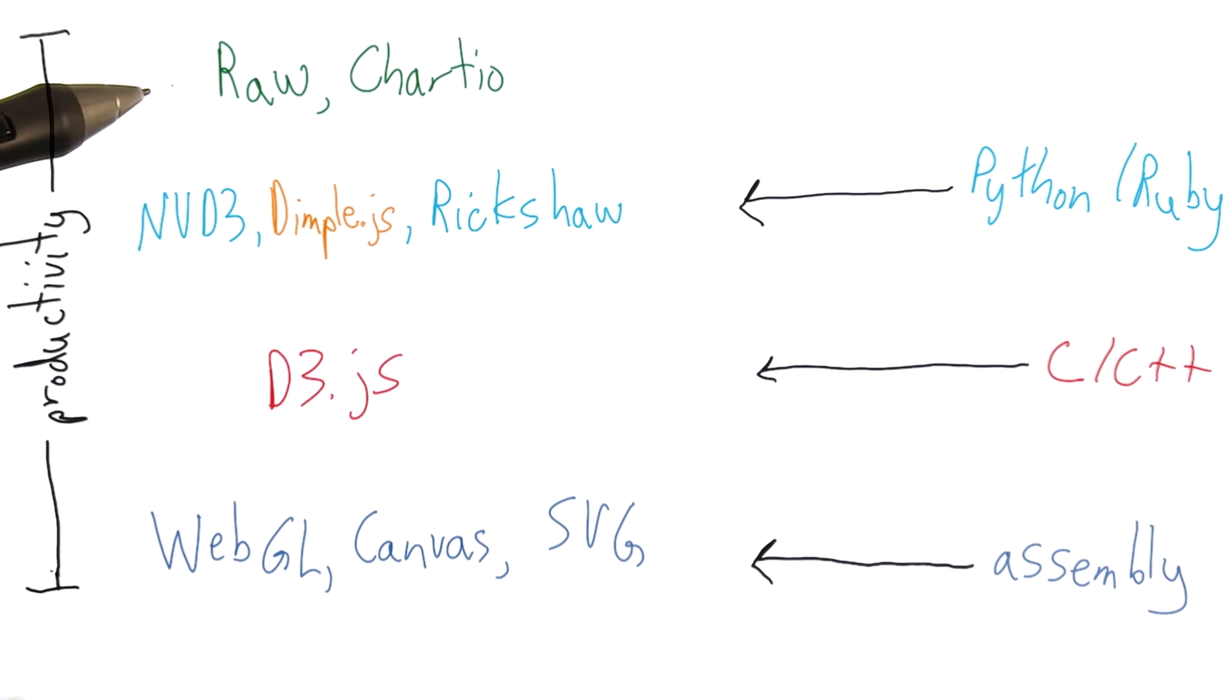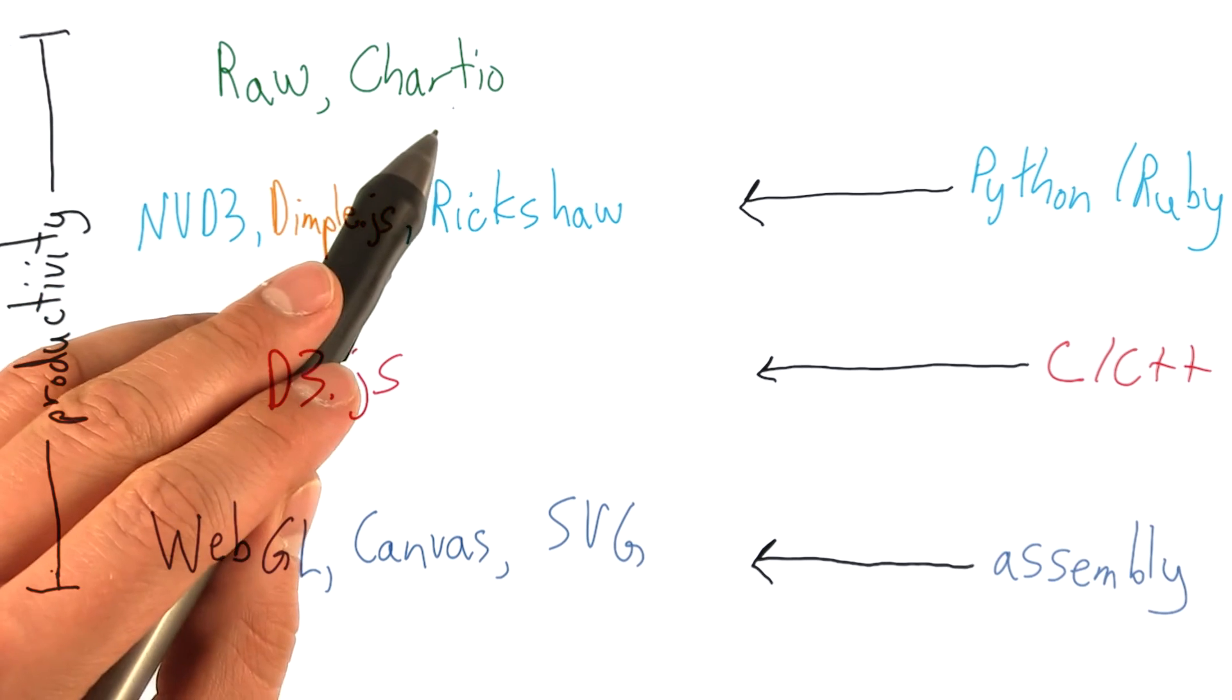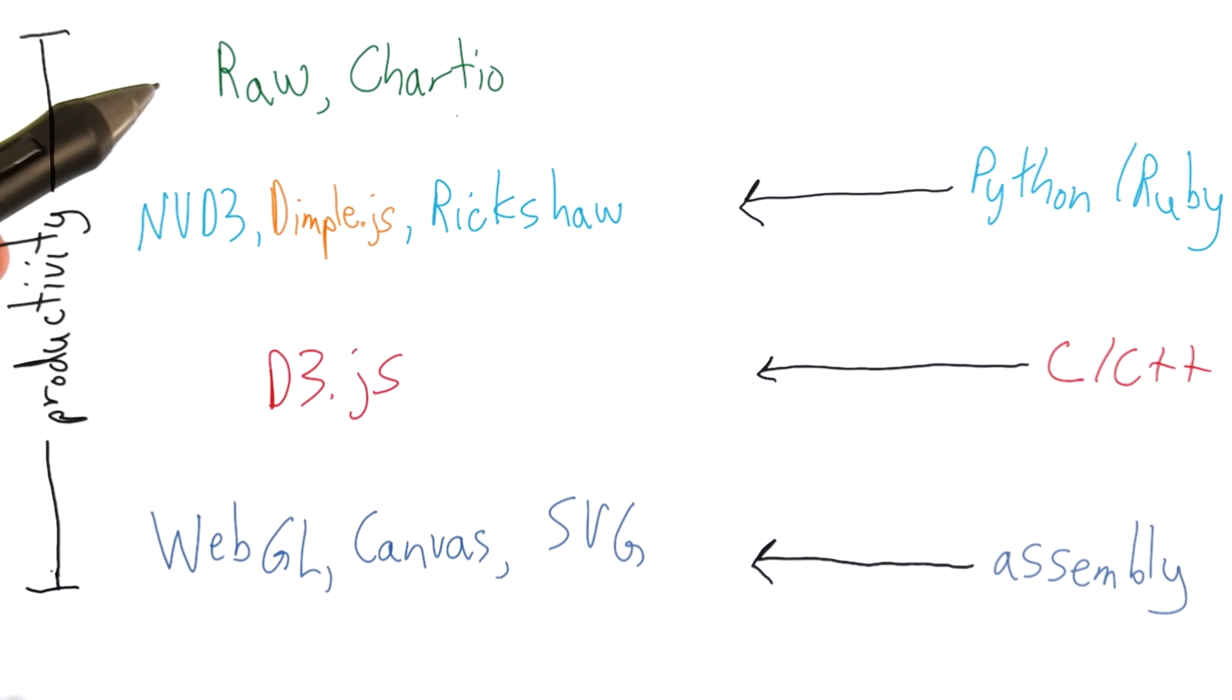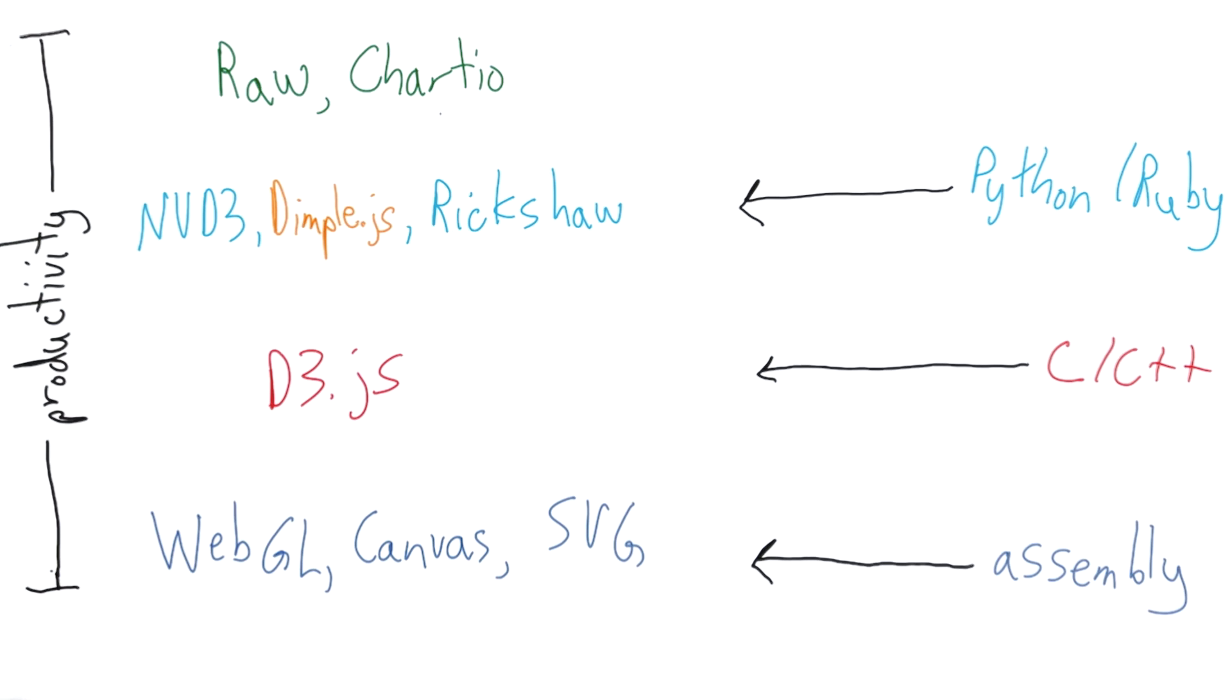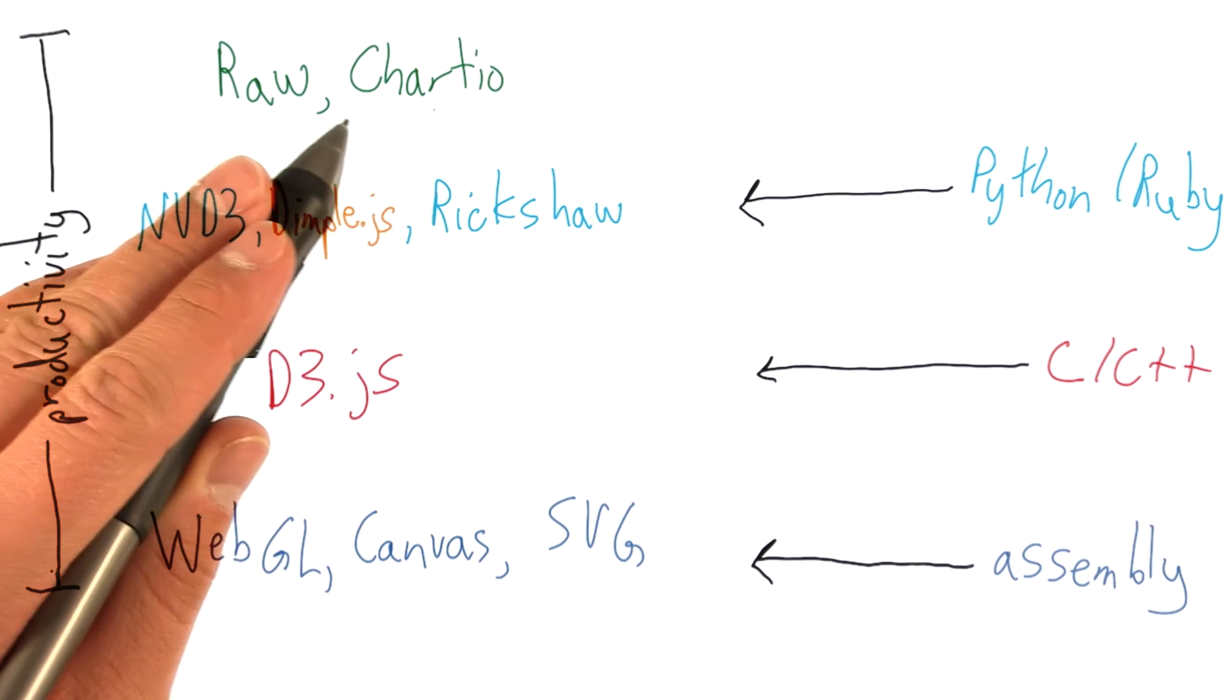At the very top of the spectrum are libraries that have graphical interfaces for creating visualizations such as RAW or Chartio. RAW is an open source library built on top of d3 that allows you to very easily and quickly build predefined charts. Chartio is a web-based product similar to Tableau that allows you to very quickly and easily explore your data to build dashboards and charts. Hence the name Chartio.